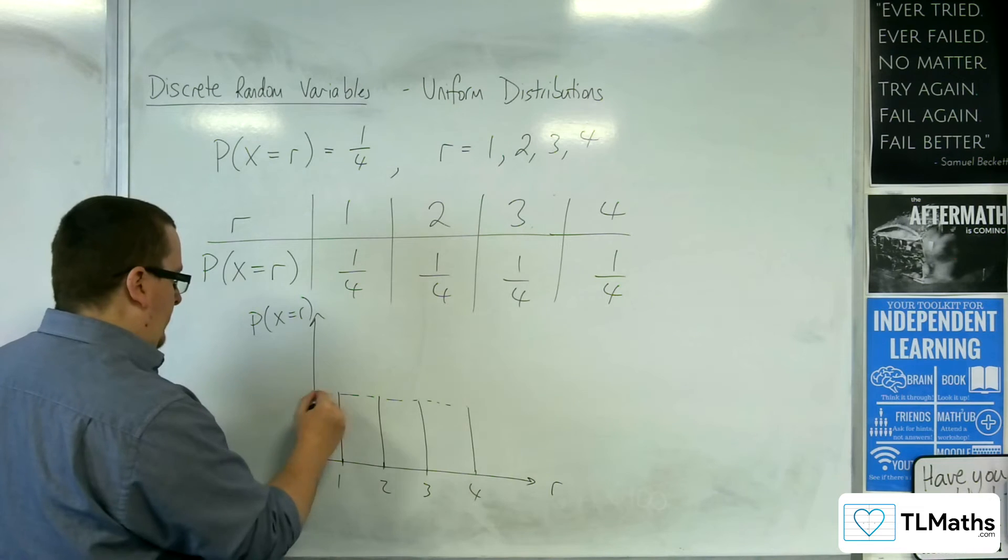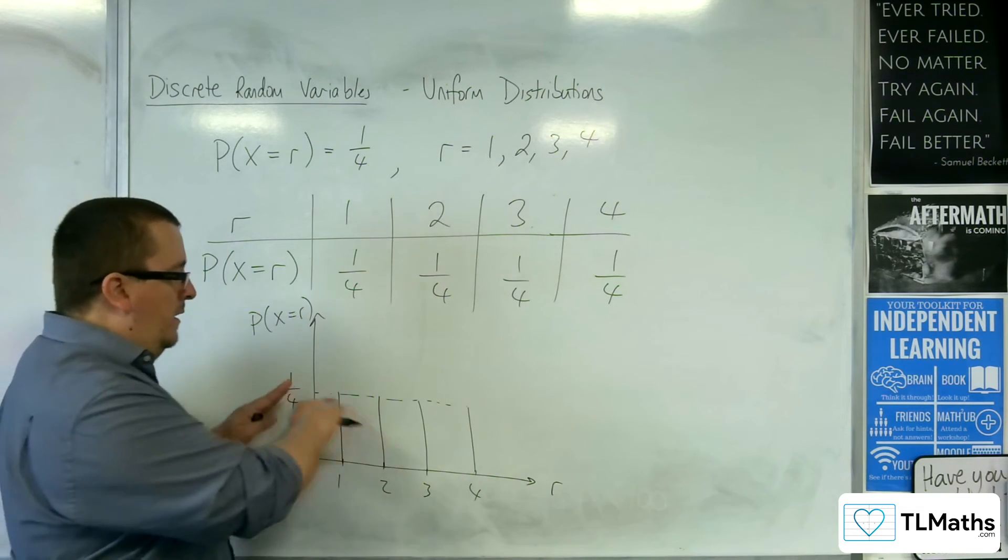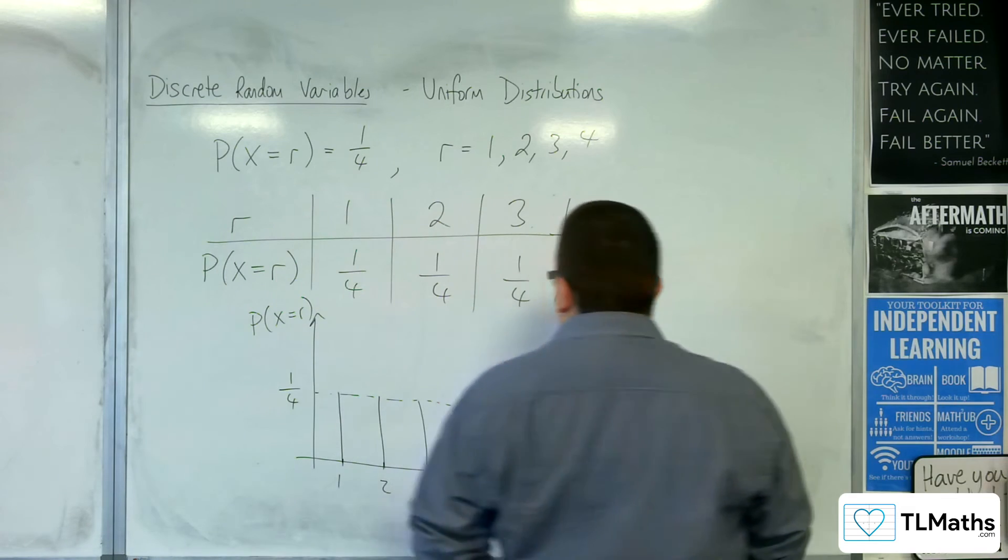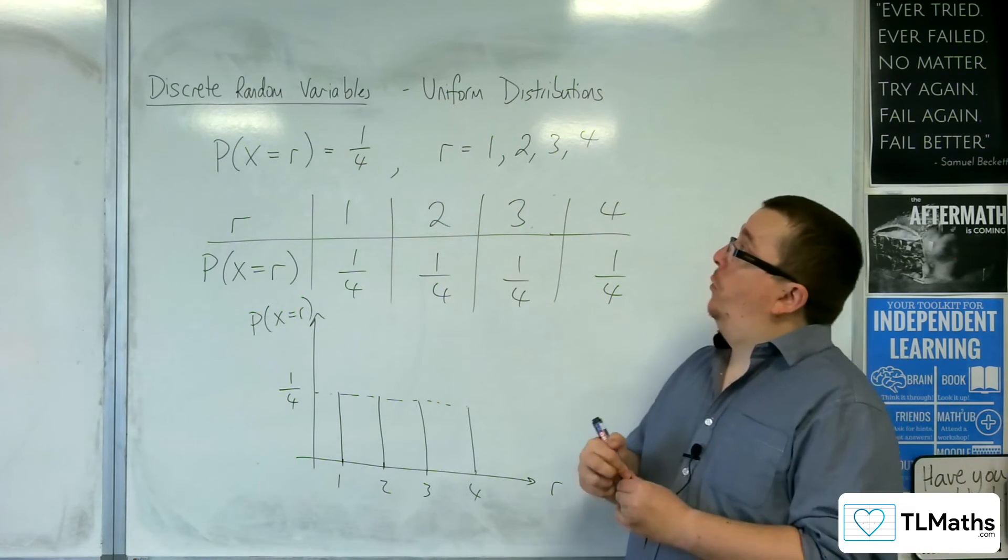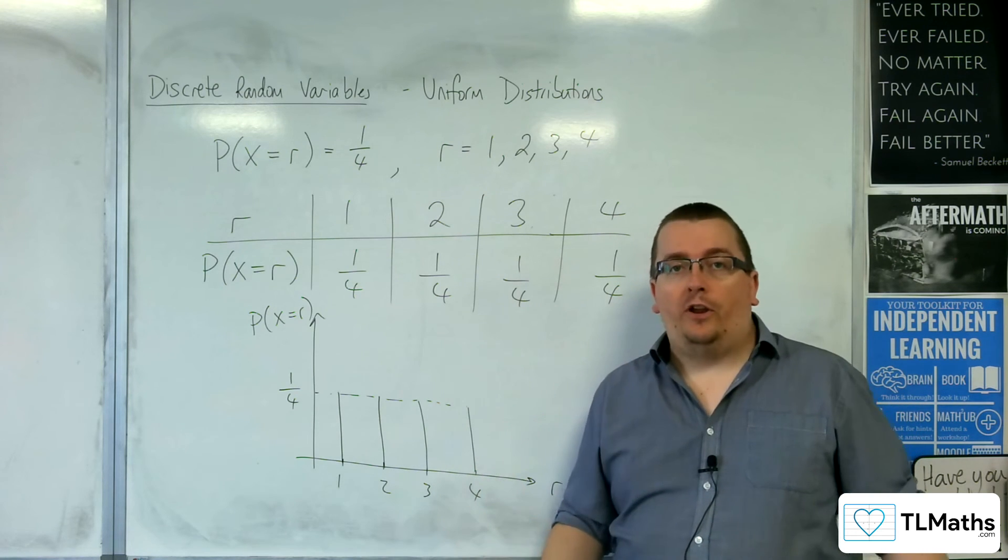Where each one of those is of a height of one quarter. So it would be a totally flat distribution. And so this is what a discrete uniform distribution looks like.